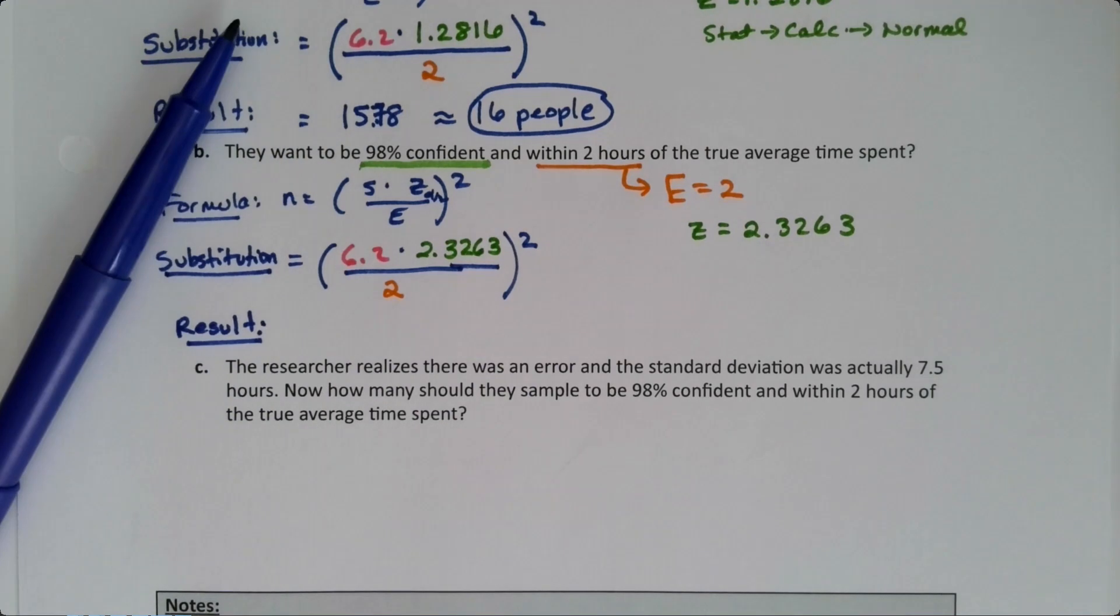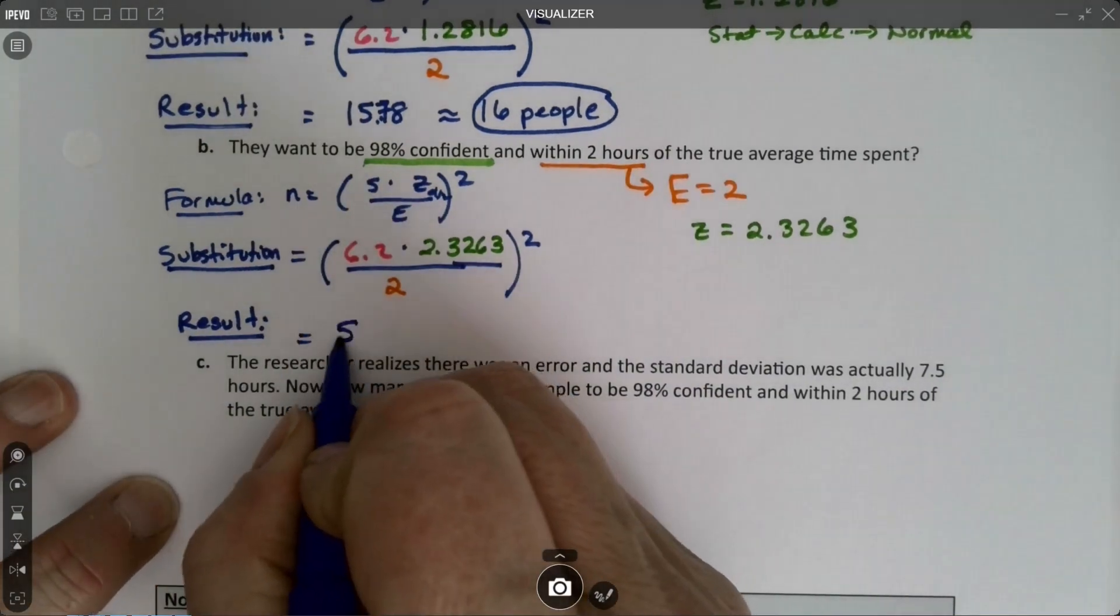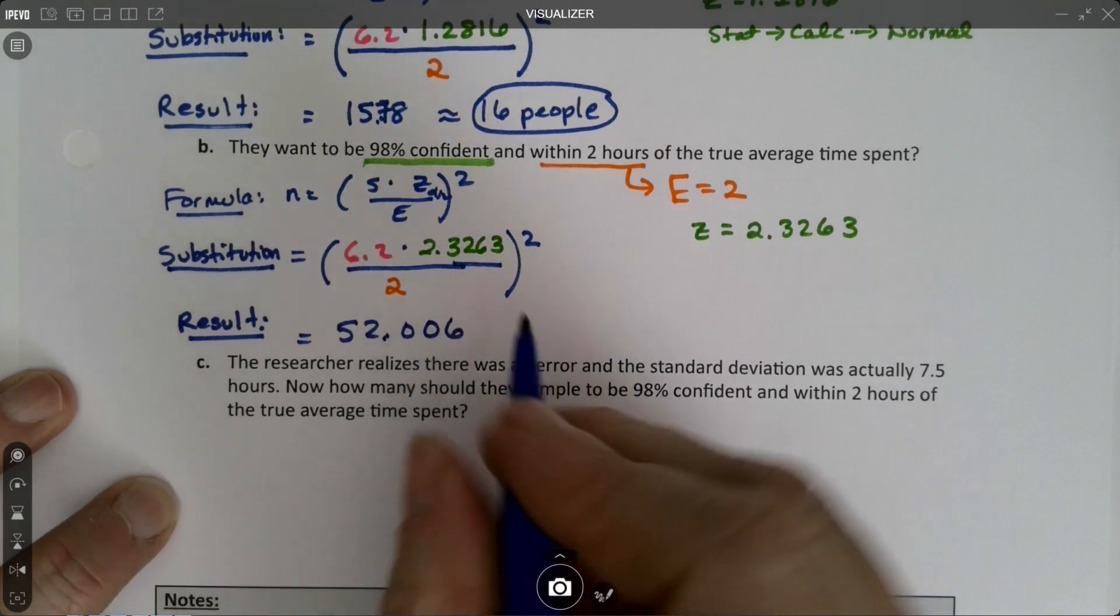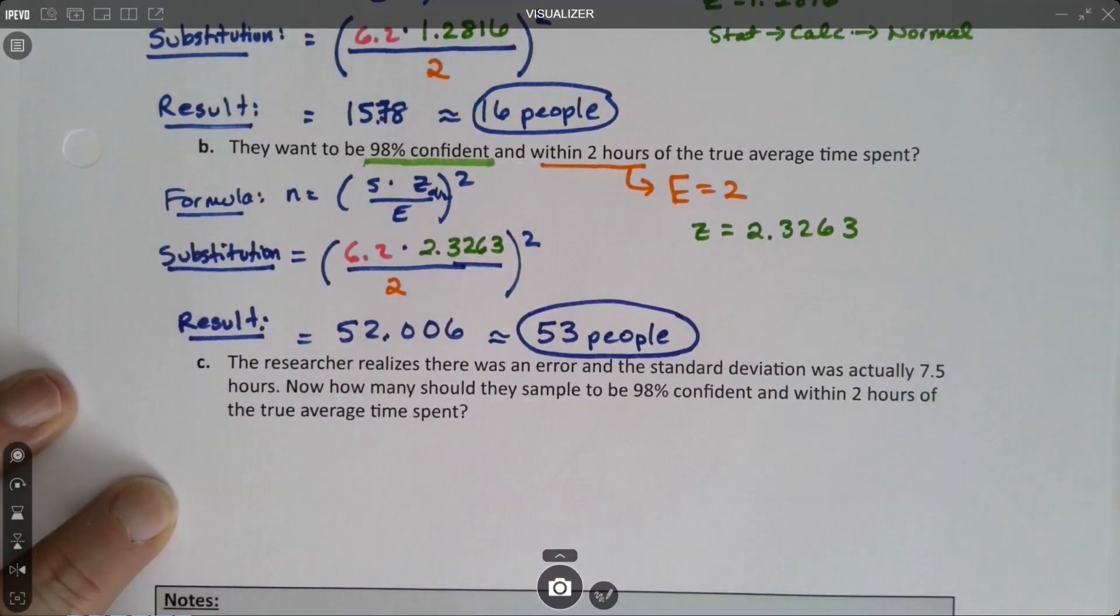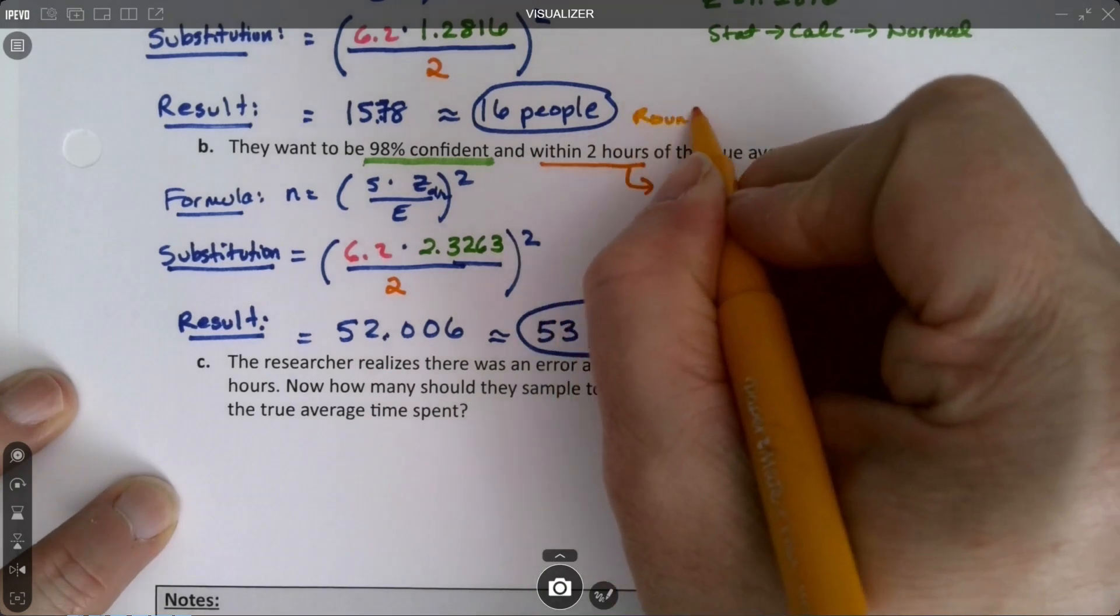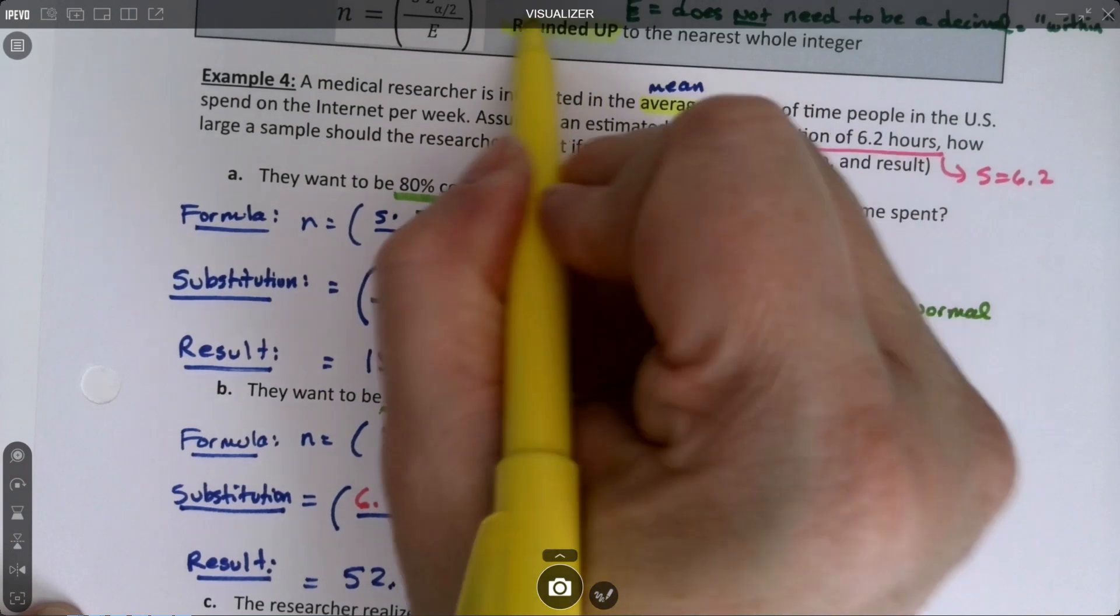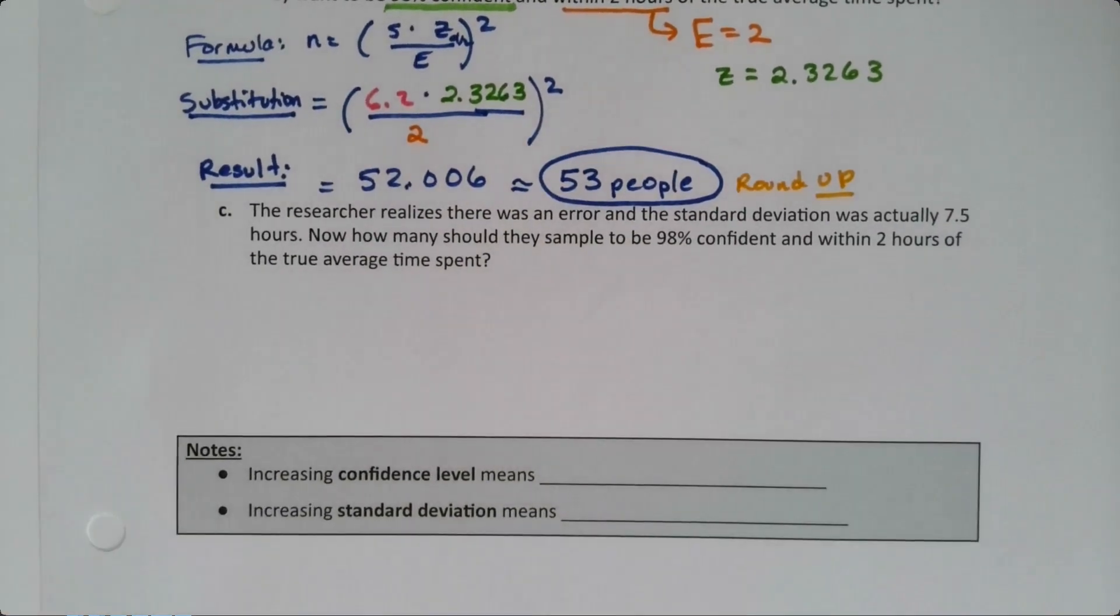So I'm going to go back to StatCrunch, or back to Desmos, I apologize. Back to Desmos. And I'm just going to change this problem. So I'll just change this number right here to 2.3, oops, 3263. And there we have it. So that gives me 52.006. Oh, so close. So this is 52.006. And despite it being that small, it must round up to 53 people. It must. It must. I didn't highlight that up here, but I'll just highlight it now. We always, always, always round up for these problems. All sample size problems are always rounded up. All of them. So it's one rule that never changes.